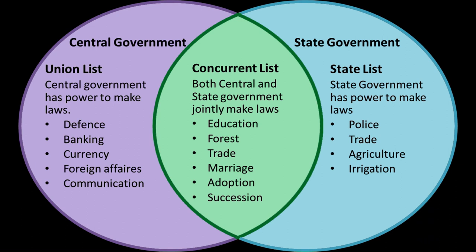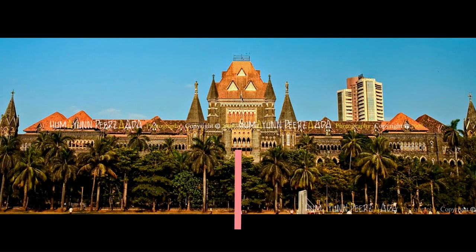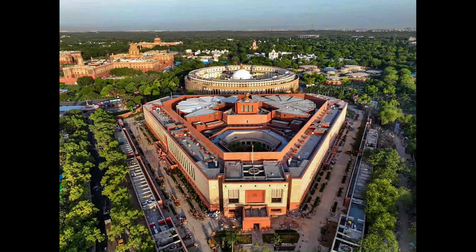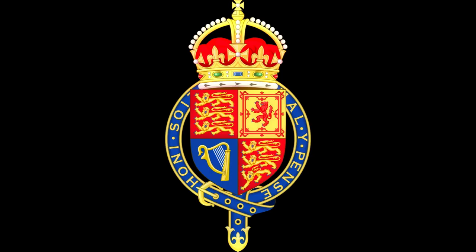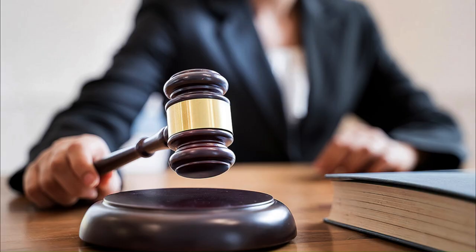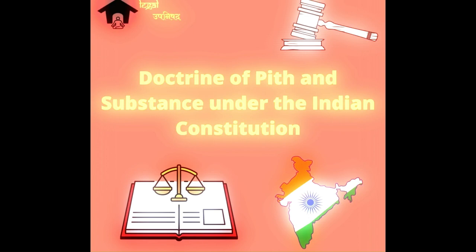The Bengal Moneylenders Act was first contested in the case of Prafullachandra v. Bank of Khulna, because it restricted the interest rate and the amount that a moneylender on any loan could recover. Promissory notes were said to be central rather than state issues. The Privy Council determined that the legislation was true to its letter and that the law governing moneylending and moneylenders was a concern for the states, and was legal even if there was incidental encroachment upon promissory notes, which is a central issue. Whenever the issue of duplication or conflict arises, the doctrine of pith and substance clarifies the subject.